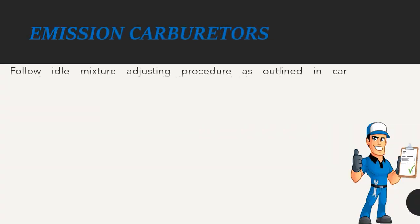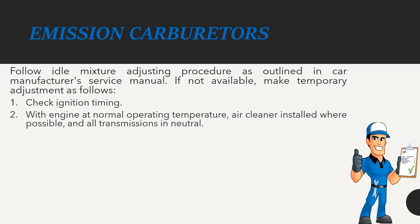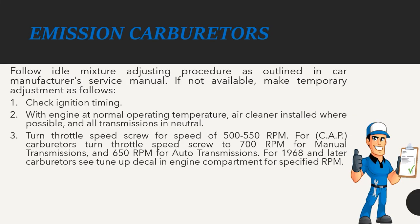Emission carburetors: Follow idle mixture adjusting procedure as outlined in the car manufacturer's service manual. If not available, make temporary adjustment as follows. Check ignition timing. With engine at normal operating temperature, air cleaner installed where possible, and all transmissions in neutral, turn throttle speed screw for 500–550 RPM. For CAP carburetors, turn throttle speed screw to 700 RPM for manual transmissions and 650 RPM for automatic transmissions. For 1968 and later, see tune-up decal in engine compartment for specified RPM.